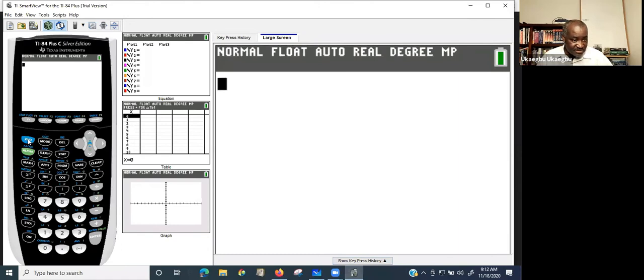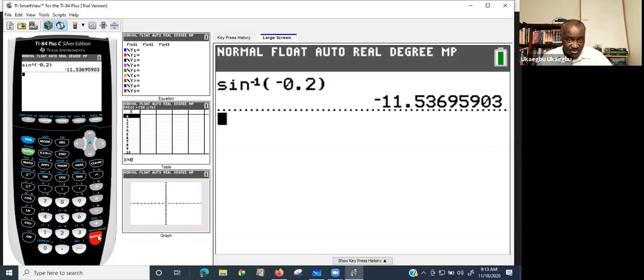So, you use your calculator. You just press second function, arc sine. This is your arc sine, negative, then you press 0.2, then you close your parenthesis, then you hit enter. Did you see what it gave you?